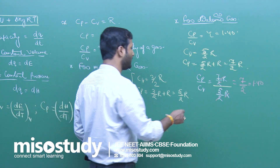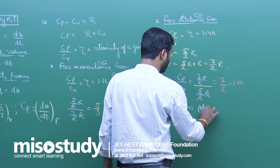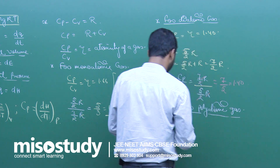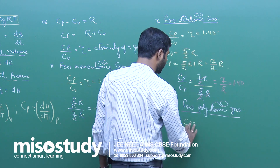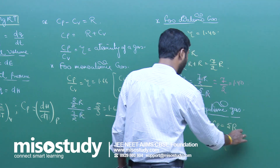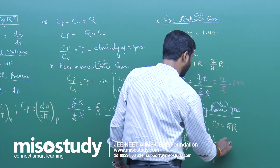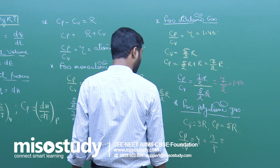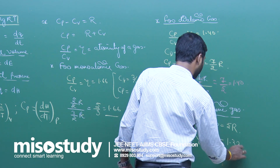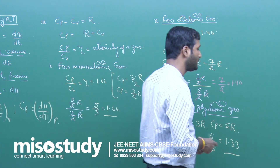For a polyatomic gas, Cv is equal to 3R and Cp is equal to 5R, so Cp upon Cv equals gamma, which is equal to 5/3, giving a value of 1.33. By using gamma you can find the atomicity of a gas.